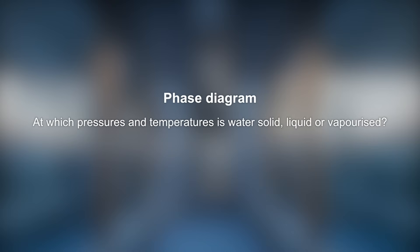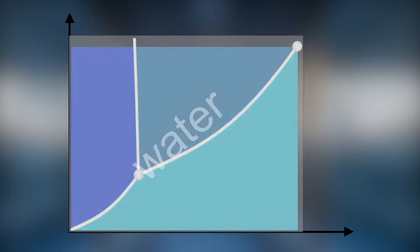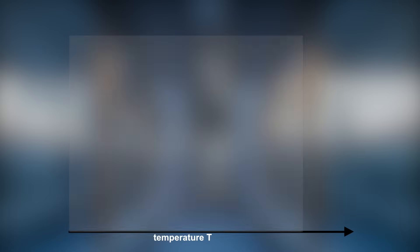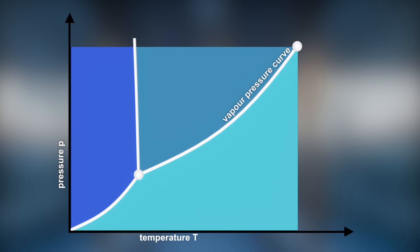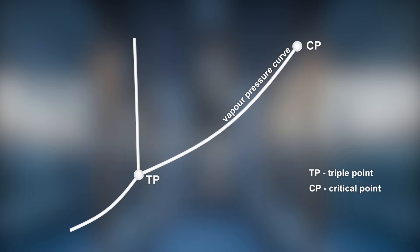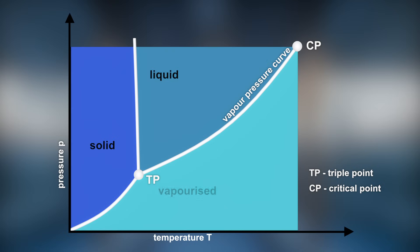The phase diagram of water shows if water is in its gaseous, liquid or solid state, depending on temperature and pressure. The horizontal axis of a diagram represents temperature while its vertical axis shows pressure. The vapor pressure curve is part of a phase diagram. It indicates at which pressures and temperatures water evaporates from liquid to vapor or condenses from vapor to liquid.